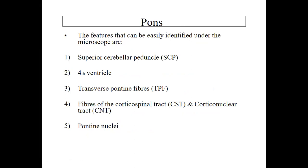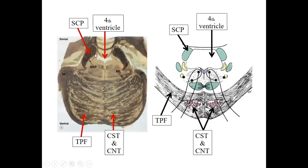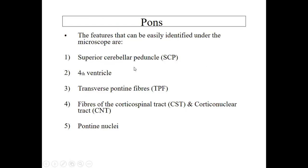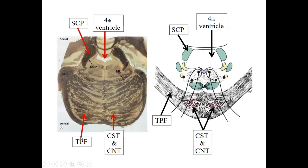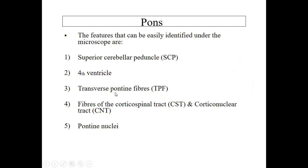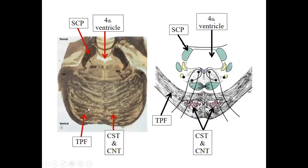Now we discuss the pons. The features that can be identified in the pons include the superior cerebellar peduncle, the fourth ventricle, transverse pontine fibers, fibers of the corticospinal tract and corticonuclear tract, and the pontine nuclei. This is shown in a cut section of the pons, where you can identify all five components.